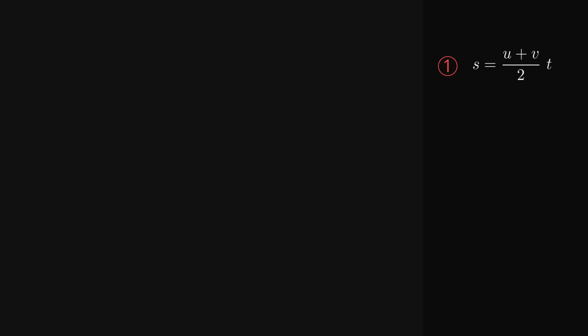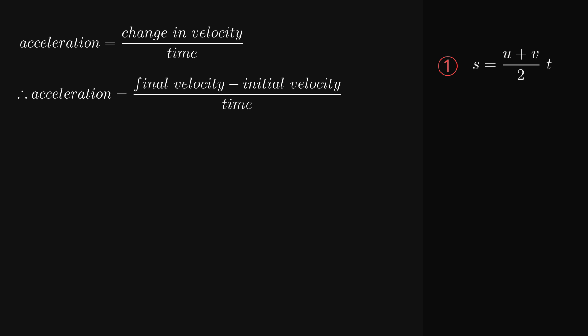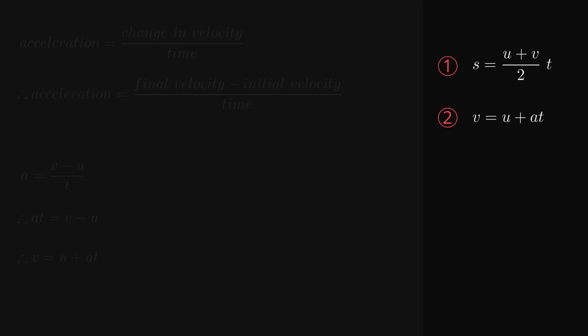Acceleration is a measure of how much velocity changes over time. Since we're assuming constant acceleration, we can say that acceleration is simply equal to the change in velocity over time, which we can rewrite as acceleration equals final velocity minus initial velocity over time. If we substitute in our variable names, we have our second kinematic equation, although usually it's rearranged by multiplying both sides by time, and then adding initial velocity to both sides to get final velocity equals initial velocity plus acceleration times time.